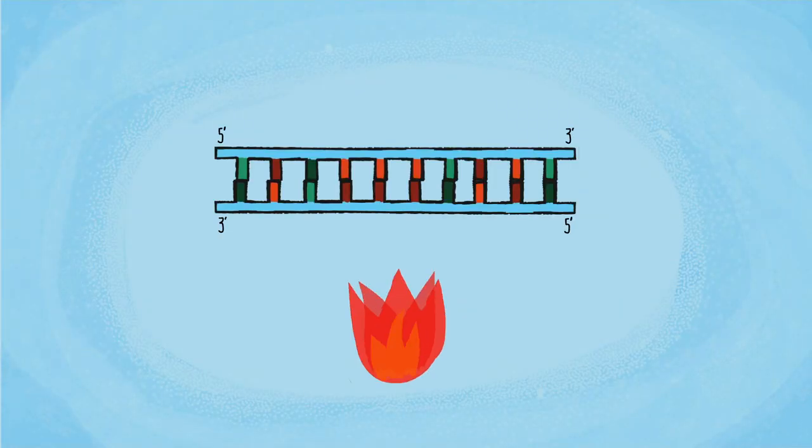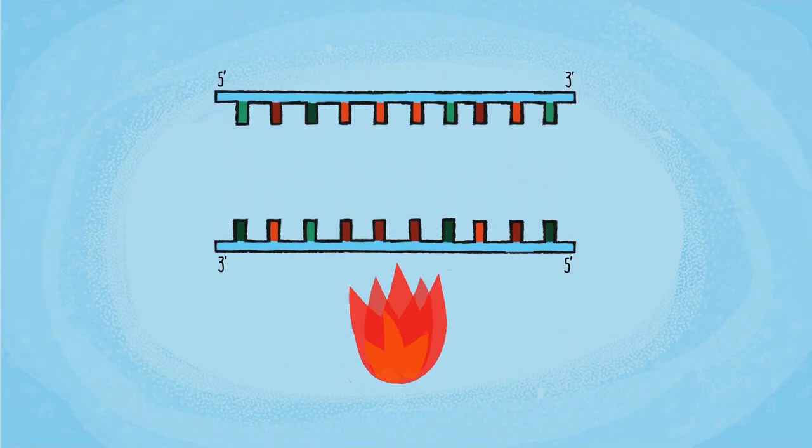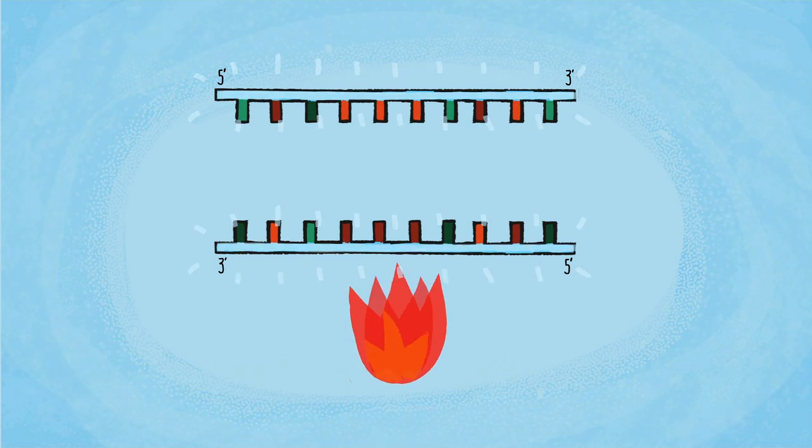A PCR cycle begins by heating the DNA to denature the double-stranded template. Because DNA has an overall negative charge due to the phosphodiester backbone, the positively charged magnesium cations associate with the DNA strands.